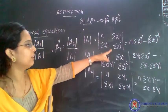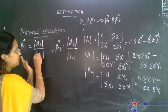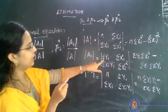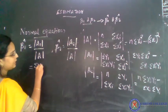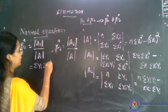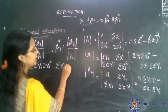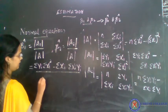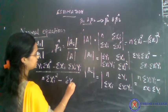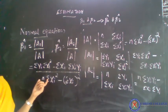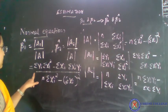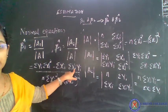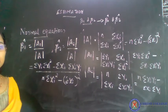Very easily we can find out the values because we have all the equations related to A1, determinant A, and determinant A2. Just substitute: beta 1 hat is equal to determinant A1, that is sigma yi into sigma xi squared minus sigma xi into sigma xi yi, divided by determinant A, which is n times sigma xi squared minus sigma xi whole squared.